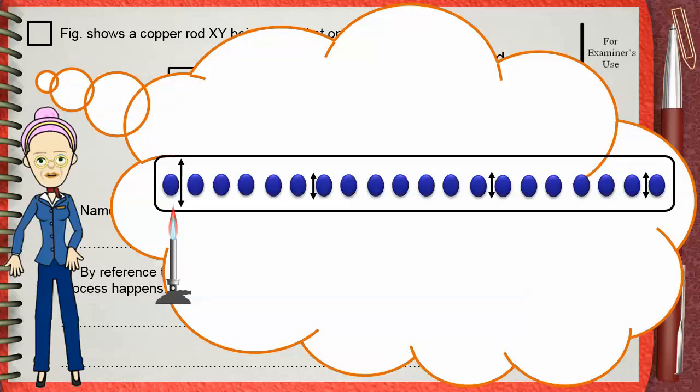This increase in vibration is transferred to the neighboring atoms one by one along the rod until it reaches the other end of the rod. This is one thing: the transfer of heat by transferring vibration through atoms.